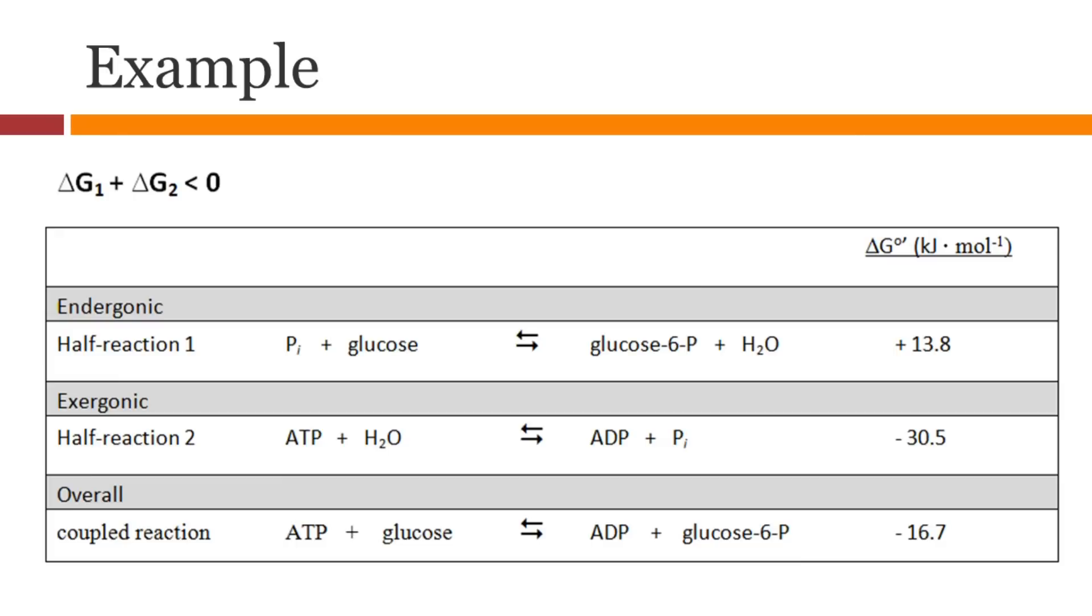This example summarizes the coupling. The first half reaction is endergonic with a positive delta G. The second half reaction is exergonic with a negative delta G. Pyrophosphate is an intermediate. When you add these two reactions together, the net delta G is negative. For a coupled reaction, delta G1 plus delta G2 has to be less than zero.